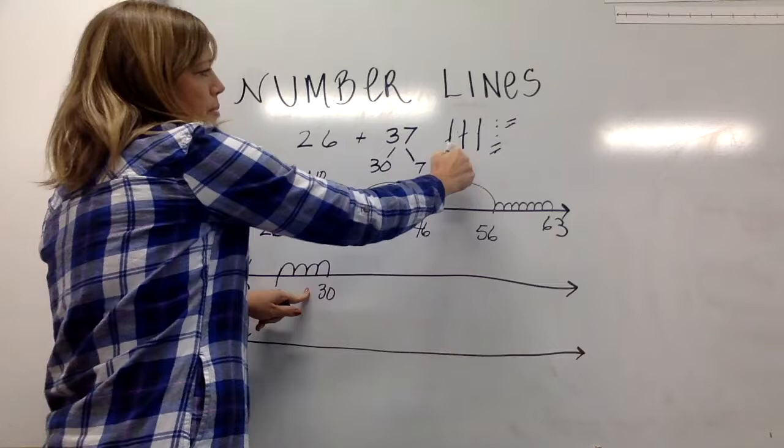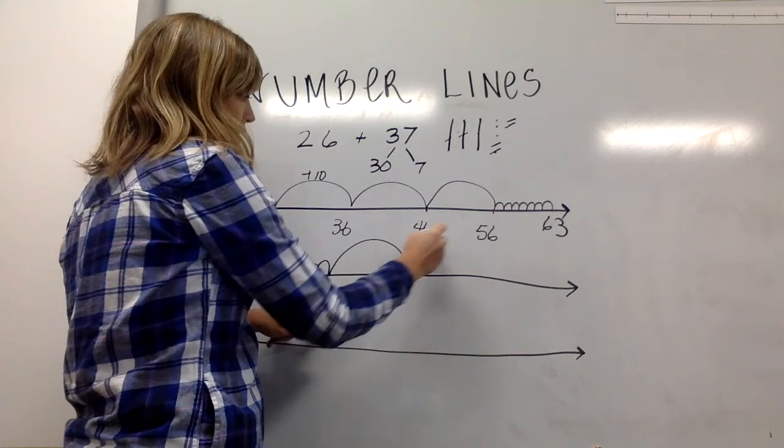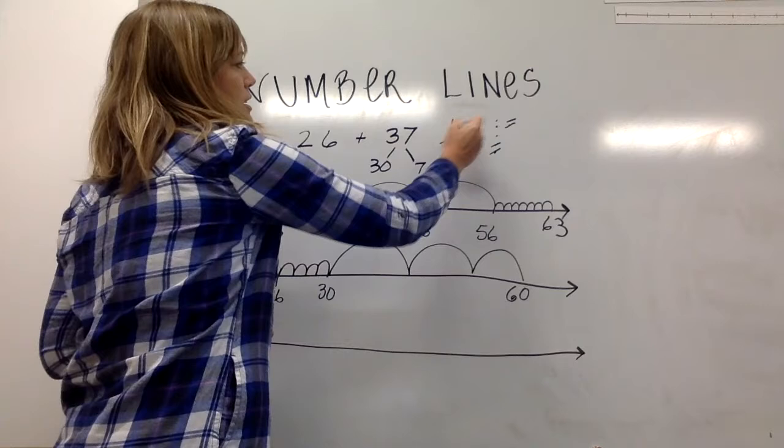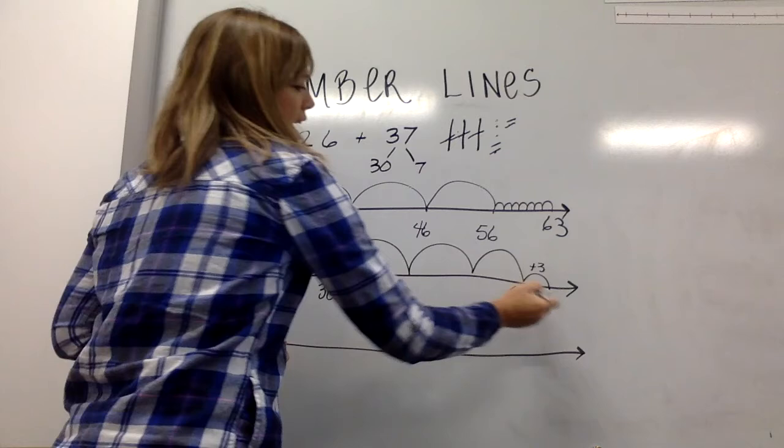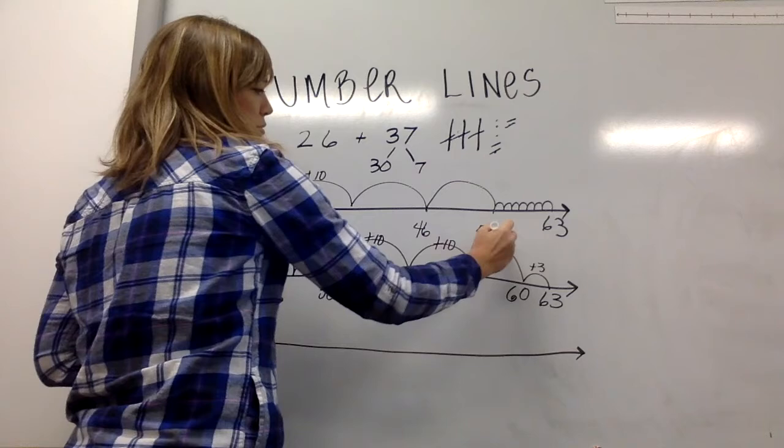Now I'm going to go ahead and jump by these three tens. Now that I'm at 30, that's easy to think about 30, 40, 50, 60. I'm now at 60 and what do I have left? I have these three ones left. I can make a jump of three more and I know I'm at 63.